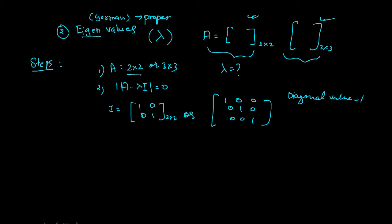If we multiply lambda by I, then everything changes to lambda on the diagonal. So lambda I is that diagonal matrix — either the 2×2 or 3×3 version depending on your matrix A. If your matrix is 2×2, go for the 2×2 version; if A is 3×3, go for the 3×3 version.